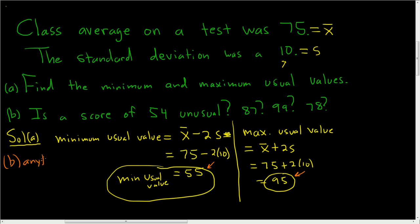This means that anything between 55 and 95, inclusive, is usual. So if someone scores between 55 and 95, that is not unusual, it is usual.